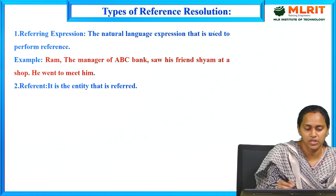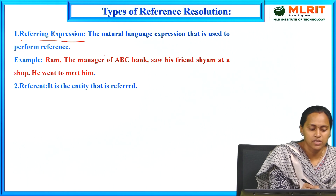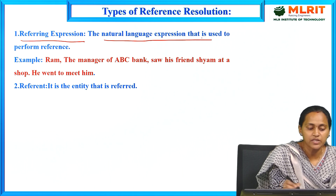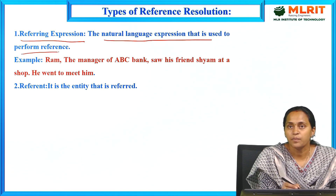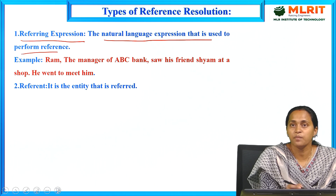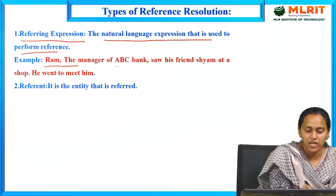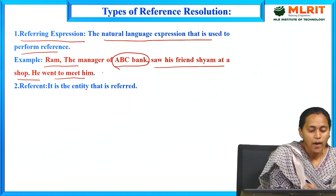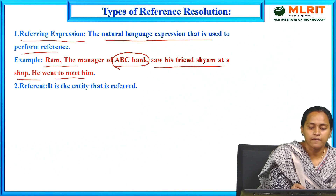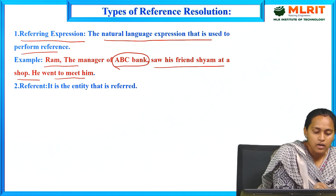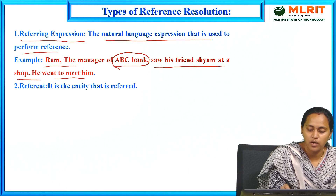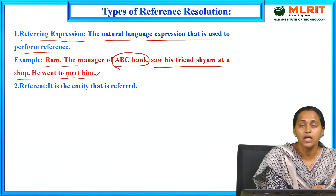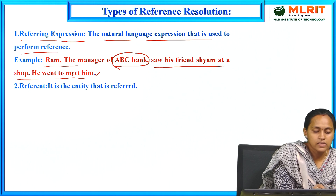Coming to the types of reference resolution. The first type is referring expression — a natural language expression used to perform reference, where one sentence refers to a previous sentence. For example: 'Ram, the manager of ABC bank, saw his friend Sham at a shop. He went to meet him.' Here, one sentence refers to the next, which is the referring expression.